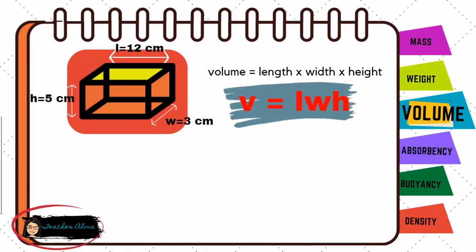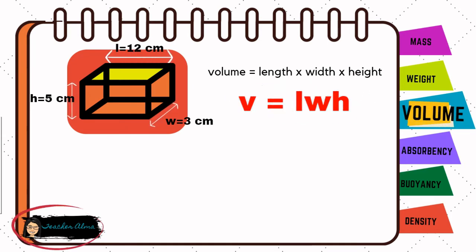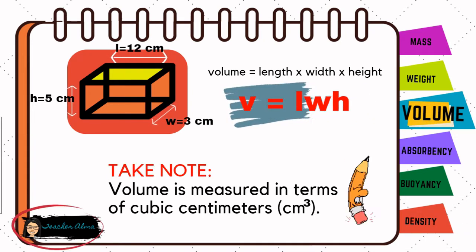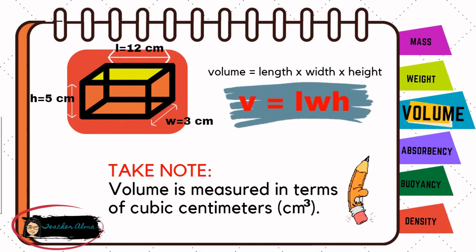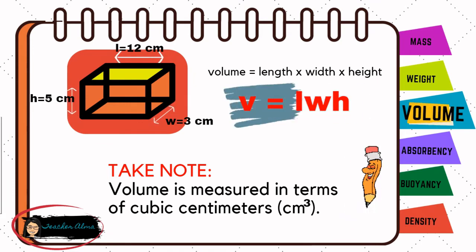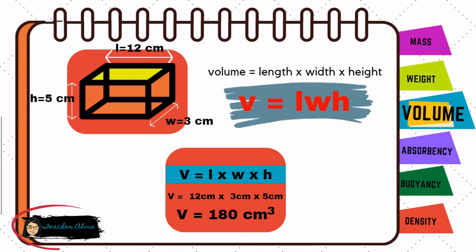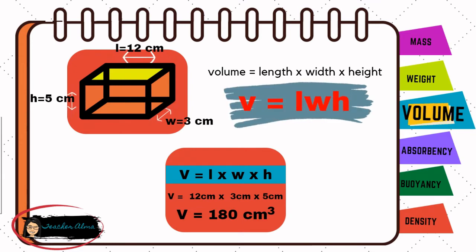To find the volume of the box, multiply the three values: length, width, and height. If the measure of the length, the width, and the height of the box is in centimeters, the volume has a unit of centimeters times centimeters times centimeters, or cubic centimeters. In this example, the length is 12 centimeters, the width is 3 centimeters, and the height is 5 centimeters. If you multiply these three values, the volume of this box is 180 cubic centimeters.